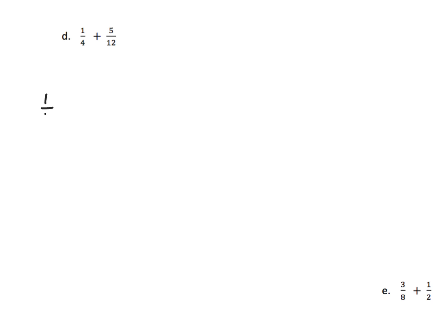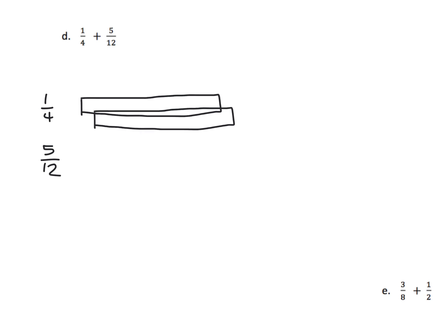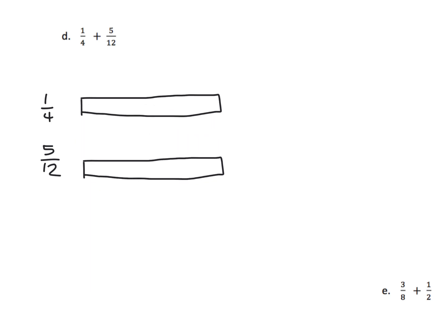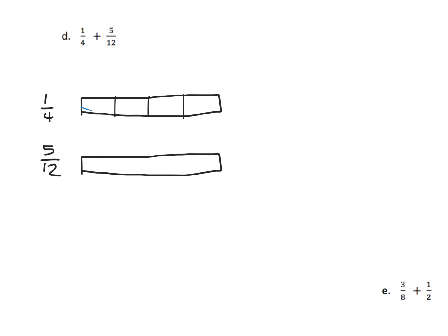Here's another example. We're going to start with one-fourth, and then we're going to draw a tape diagram for five-twelfths. Here is my drawing for one-fourth. I want two of those that are identical, so I've copied them. We have identical tape diagrams and we're going to draw that one-fourth — cut it into four equal-sized pieces and shade in one of those fourths.